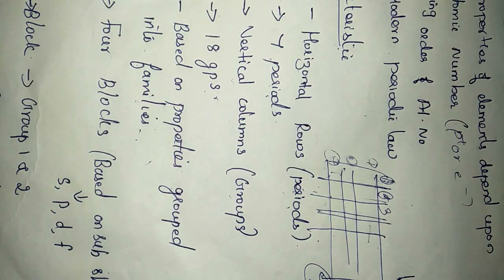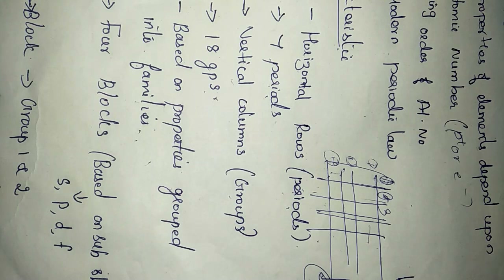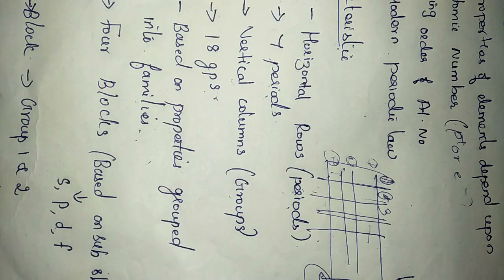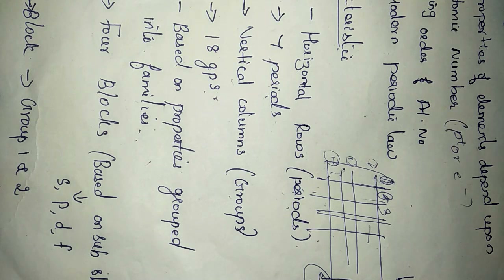There are 18 groups or 18 families, each carrying a name. Group one is called the alkali metals family. Group two is the alkaline earth metals family. Groups 3 to 12 are called transition metals. Group 13 is the boron family, group 14 is the carbon family, group 15 is the nitrogen family, group 16 is the oxygen family, group 17 is the halogen family, and group 18 is noble gases.